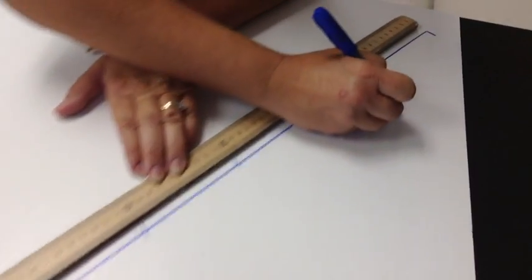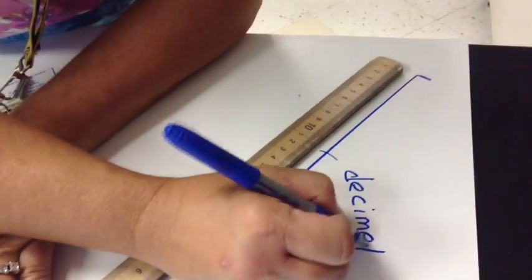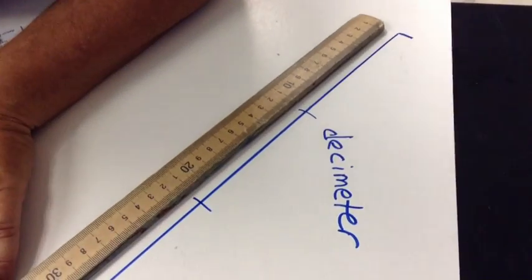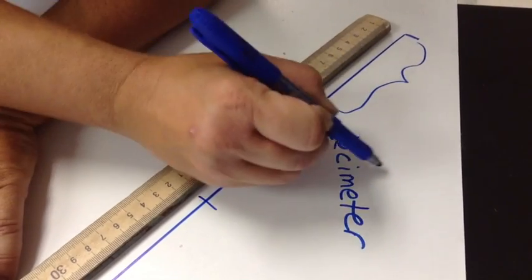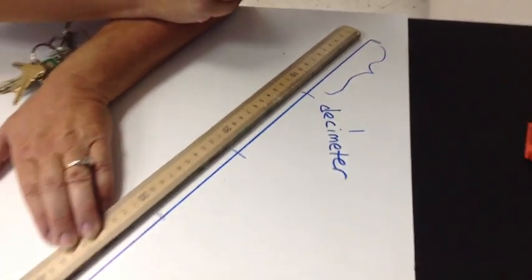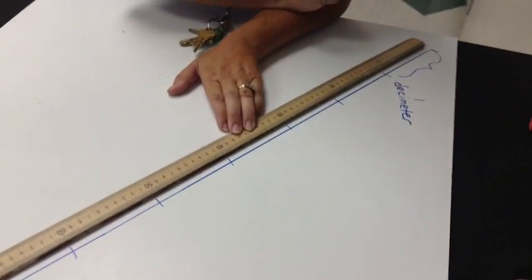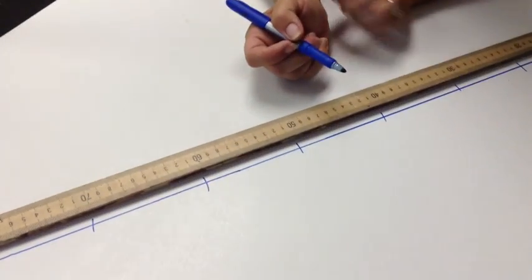Ten of those are decimeters. See, decimeter - this distance from here to here is one decimeter.